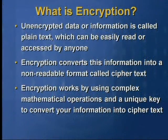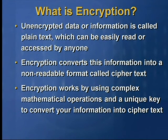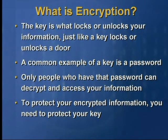Unencrypted data or information is called plain text, which can be easily read or accessed by anyone. Encryption converts this information into a non-readable format called ciphertext. Encryption works by using complex mathematical operations and a unique key to convert your information into ciphertext. The key is what unlocks or locks your information, just like a key locks or unlocks a door.